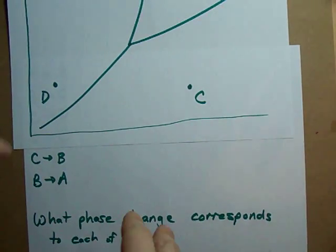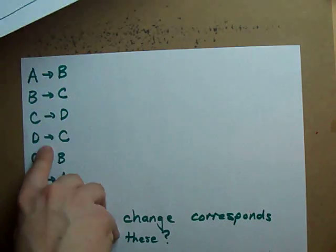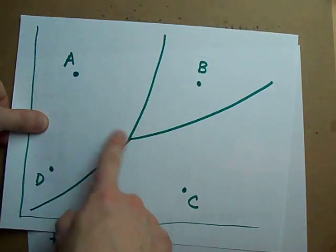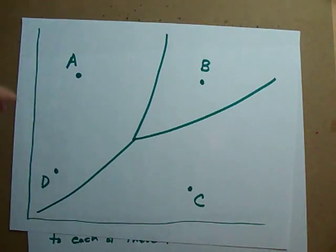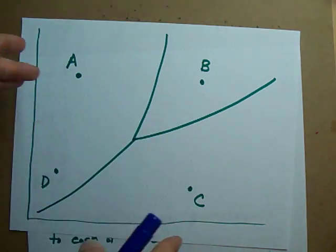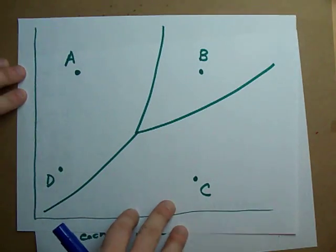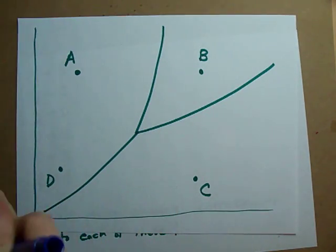Hey, what phase change corresponds to each of these points turning into one of these other points on the phase diagram? Now you'll be given a phase diagram with some points, maybe you're told what temperature and pressure some of these are at, but here's all you need to know.